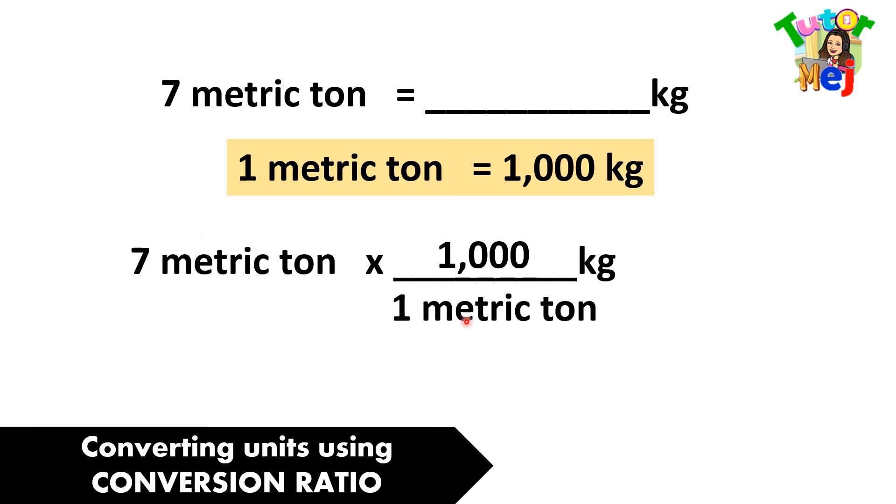Metric ton over metric ton cancels out. So, 7 times 1,000 gives us 7,000 kilograms. Therefore, 7 metric tons equals 7,000 kilograms.